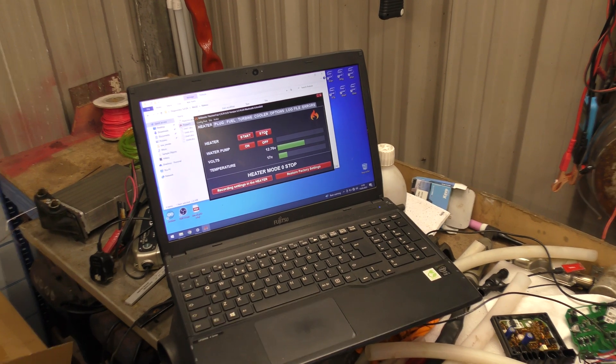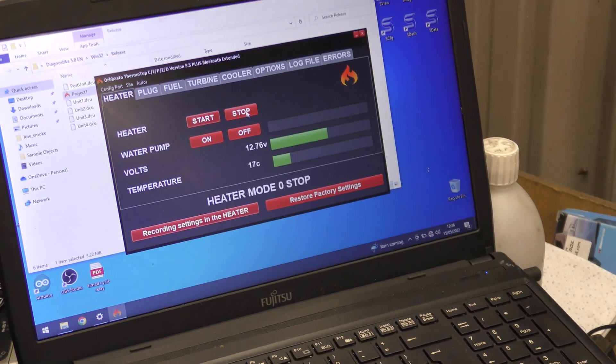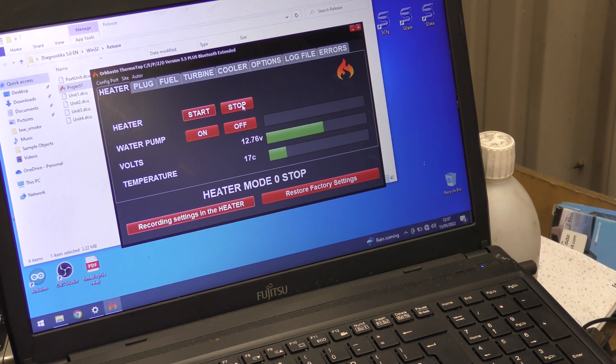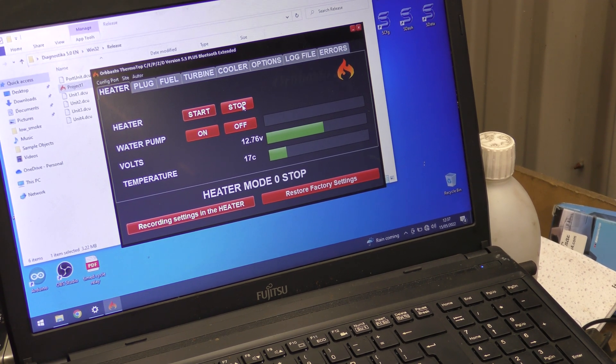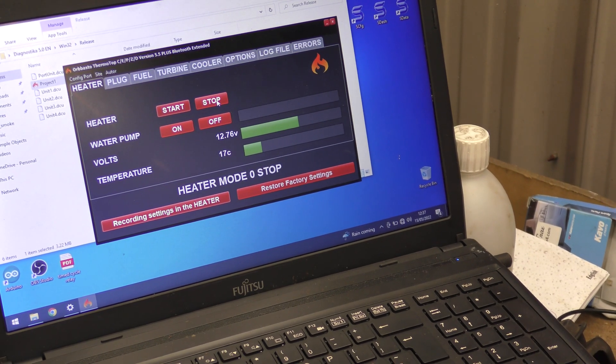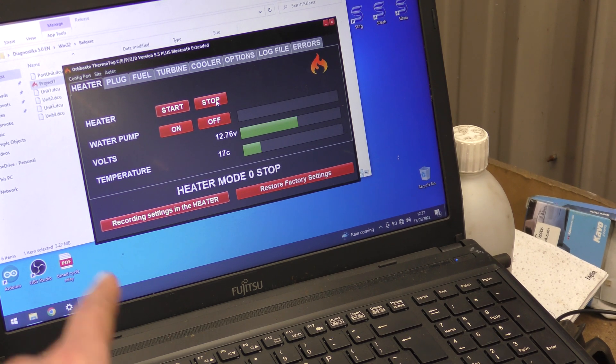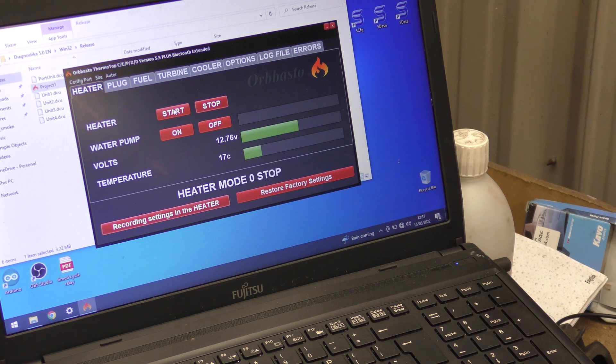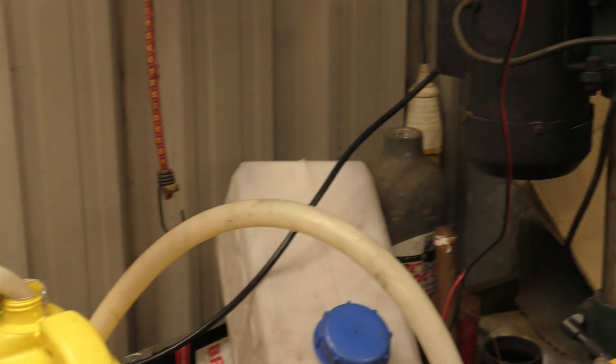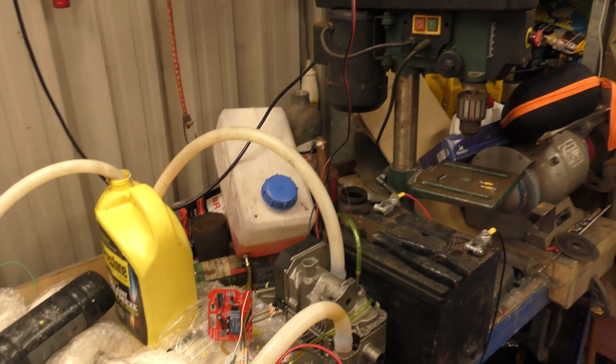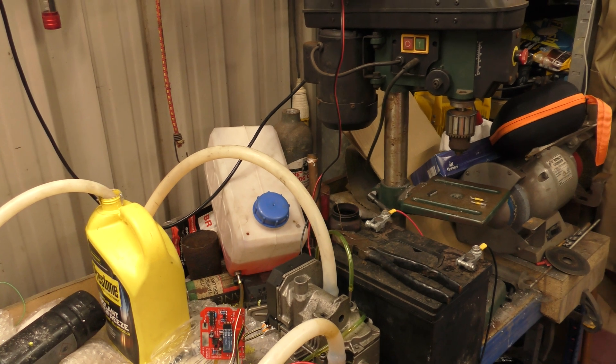And over on the laptop is the Bluetooth software, the Orbasto software that's currently communicating with the heater. The heater is currently mode zero stop. The temperature will be wrong because the board's not sitting in the heater. As soon as I press start, it'll kick off and start heating the glow plugs up, then turn the fuel on, then turn the fan up.